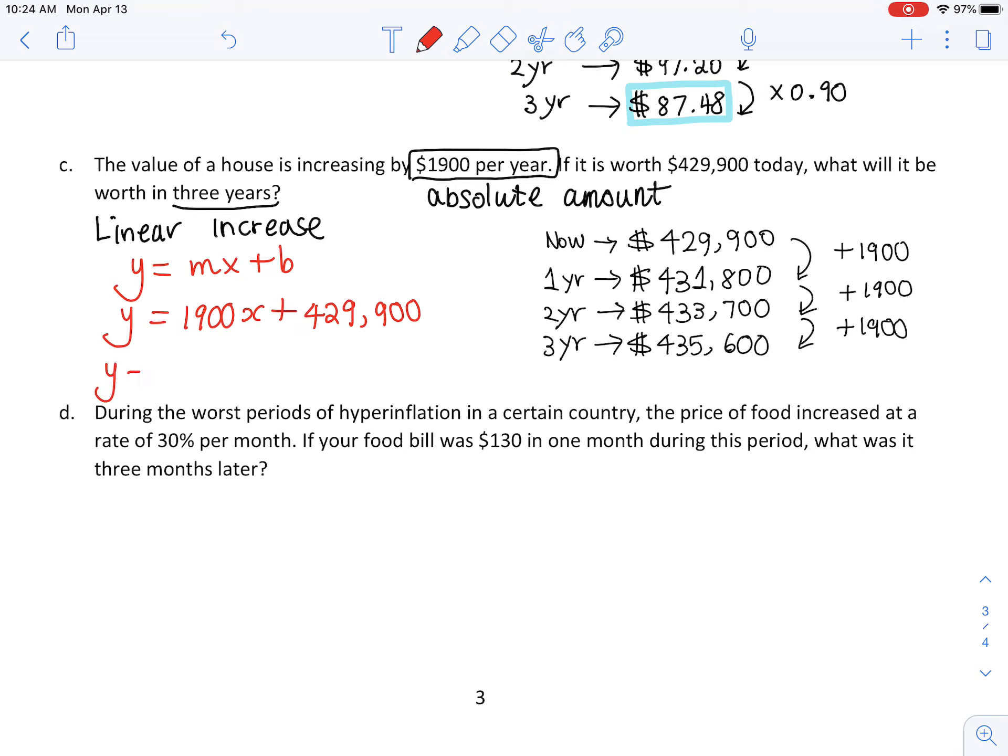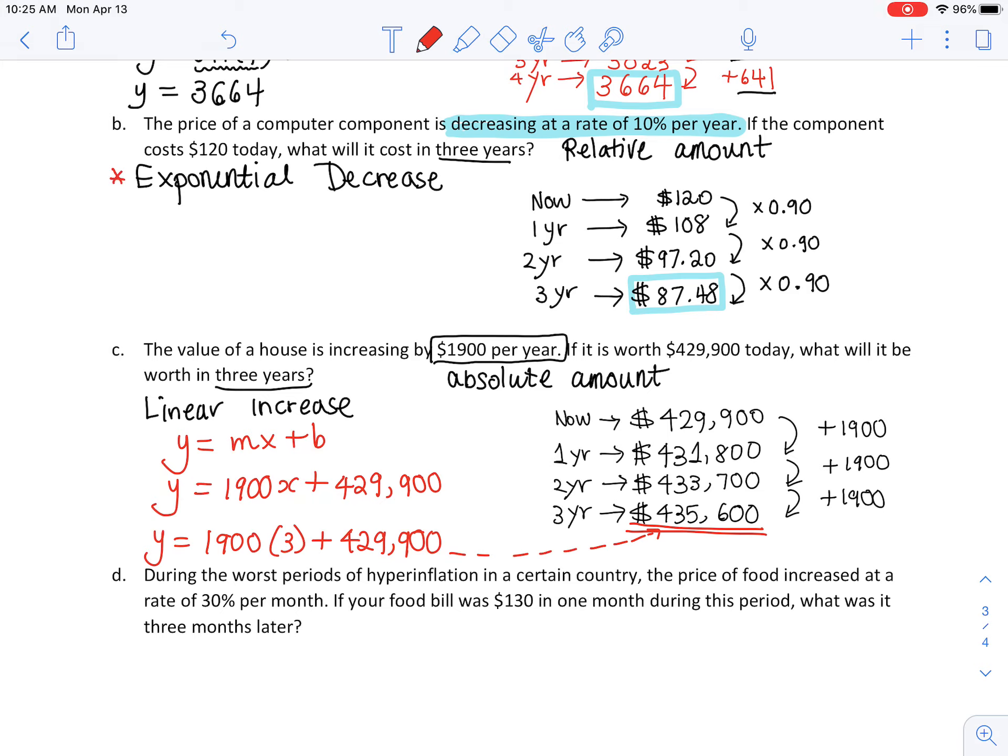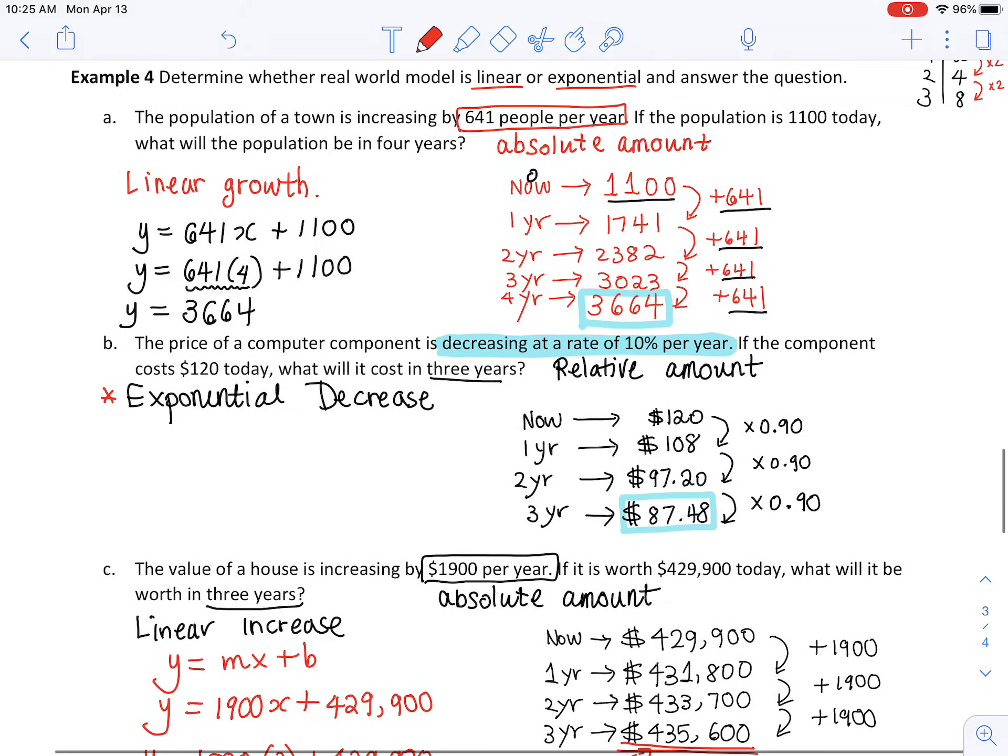What's the beginning amount that we started from? This house today is $429,900, so that's our b. If you are interested in the price of this house in the next three years, we plug in 3 into this linear function, and if you do that you will get the same amount. You do know how to write linear functions and use them for linear increase or decrease. I'll show you how to write equations for exponential increase or decrease in 6.2.